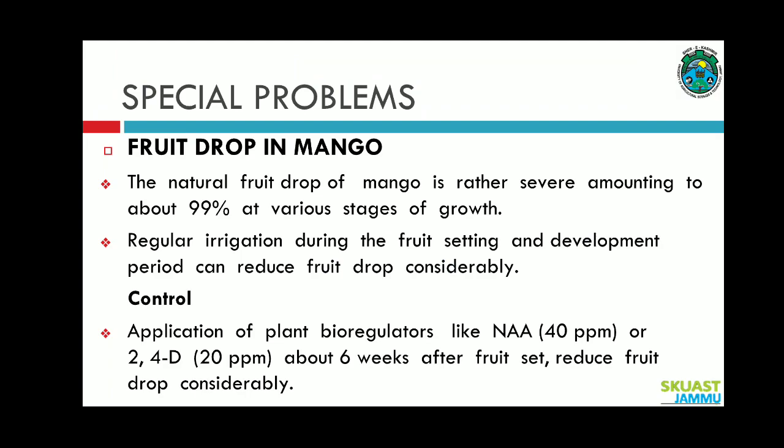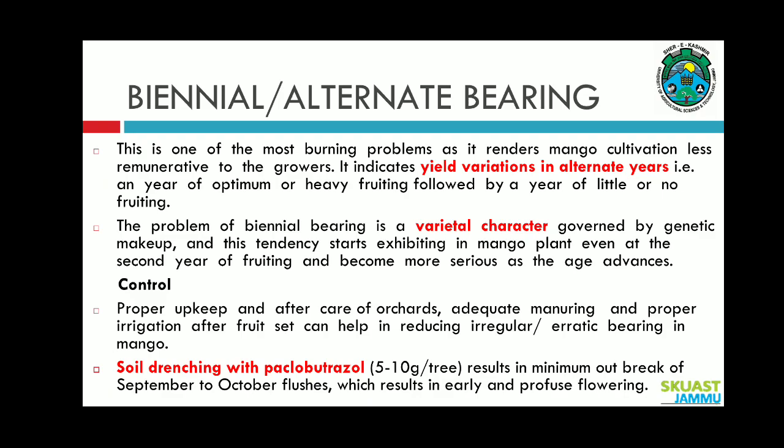Fruit drop in mango: the natural fruit drop of mango is rather severe, amounting to 99 percent at various stages of growth, right from fruit initiation to its marble stage. Regular irrigation during the fruit setting and development period can reduce fruit drop considerably. For control of fruit drop, the application of naphthalene acetic acid 40 ppm (40 mg per liter) or 2,4-D 20 ppm (20 mg per liter) about six weeks after fruit set reduces fruit drop considerably.